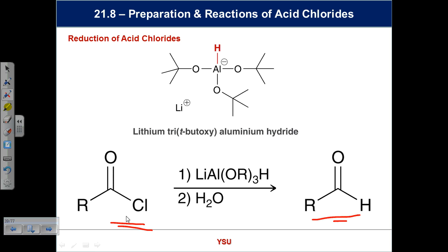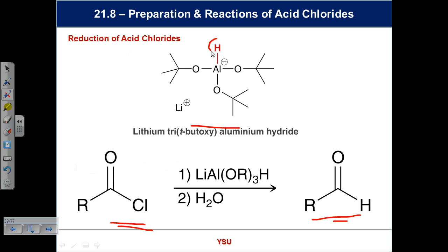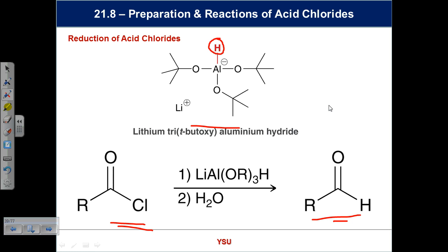Using SOCl₂ to make the acid chloride, then treating with lithium tri-tert-butoxyaluminium hydride — a reagent that has only one hydrogen, unlike LAH — stops at the aldehyde. You don't have a second equivalent of hydride, so it can't reduce further. The second step requires water for workup to make the intermediate collapse. This reagent gives selectivity: you can stop halfway and don't have to go all the way to the primary alcohol.